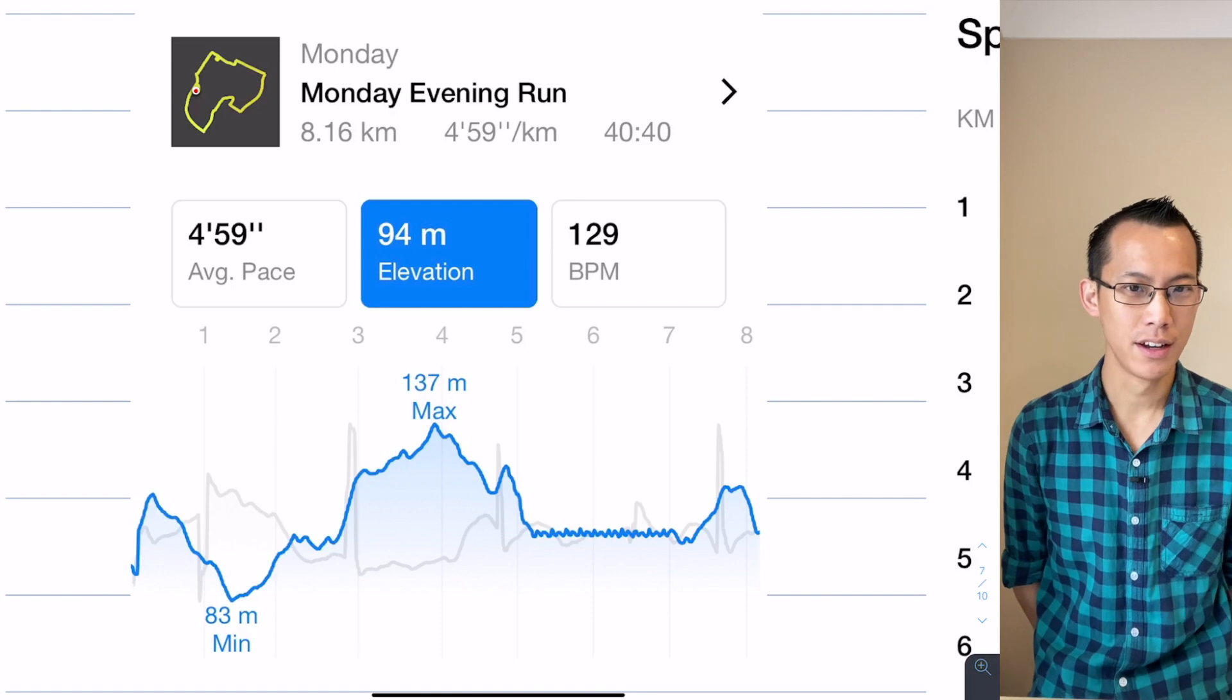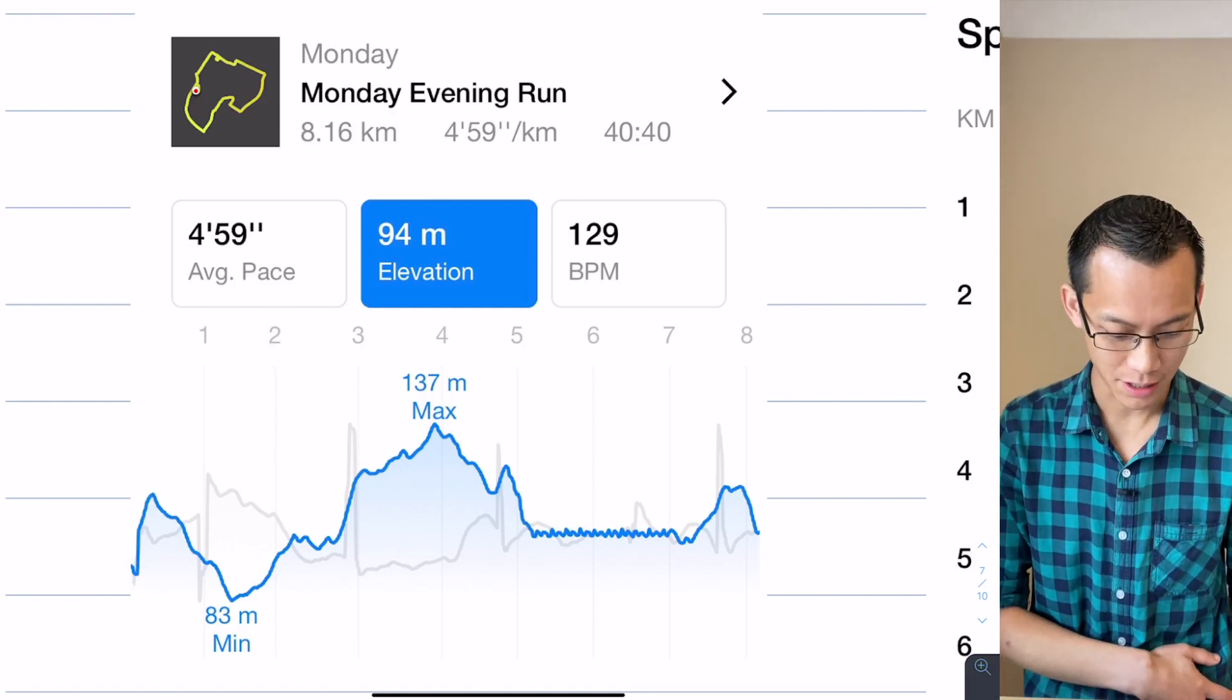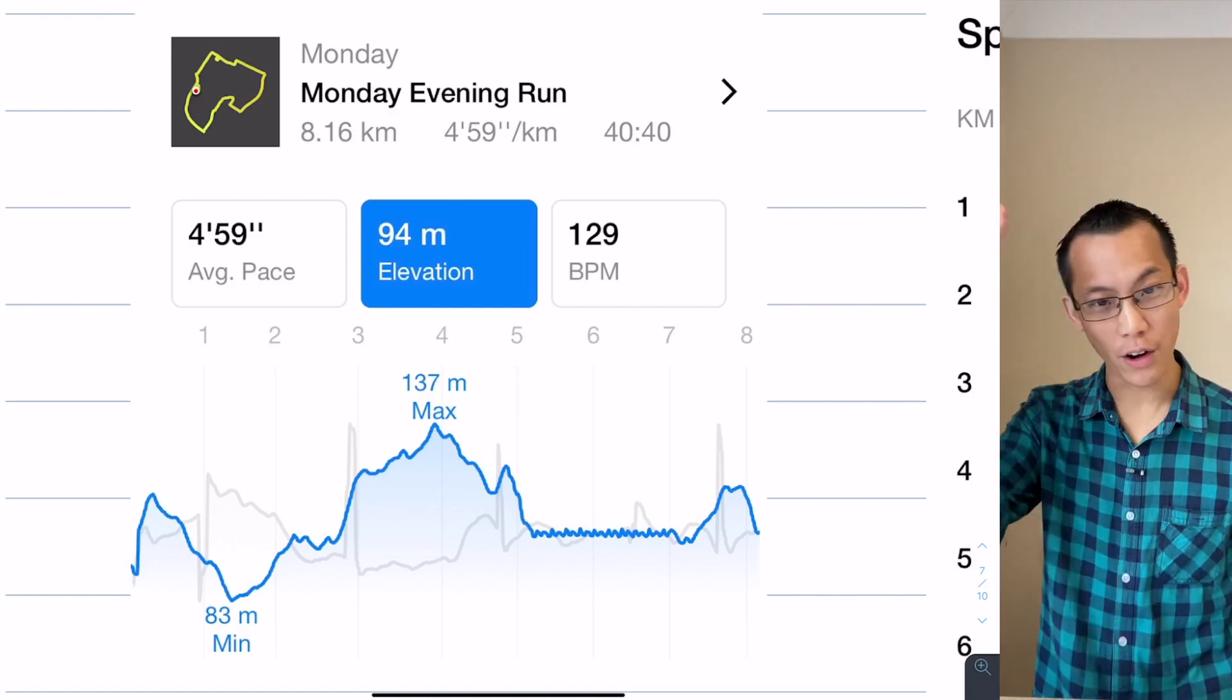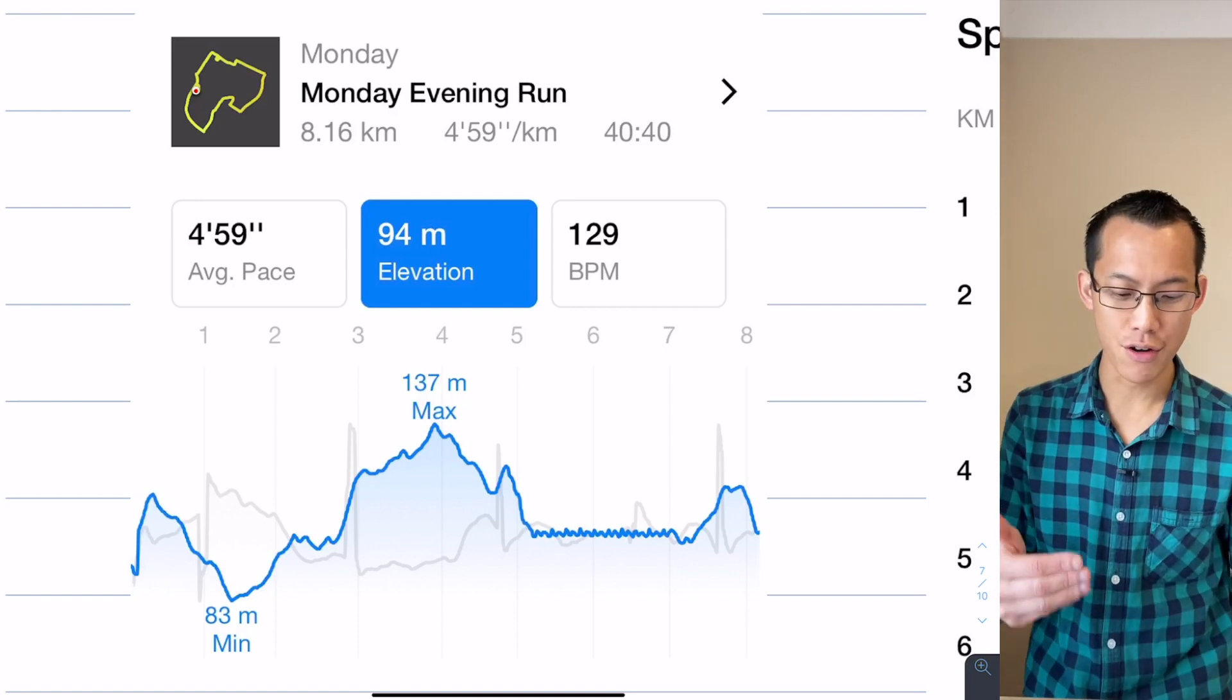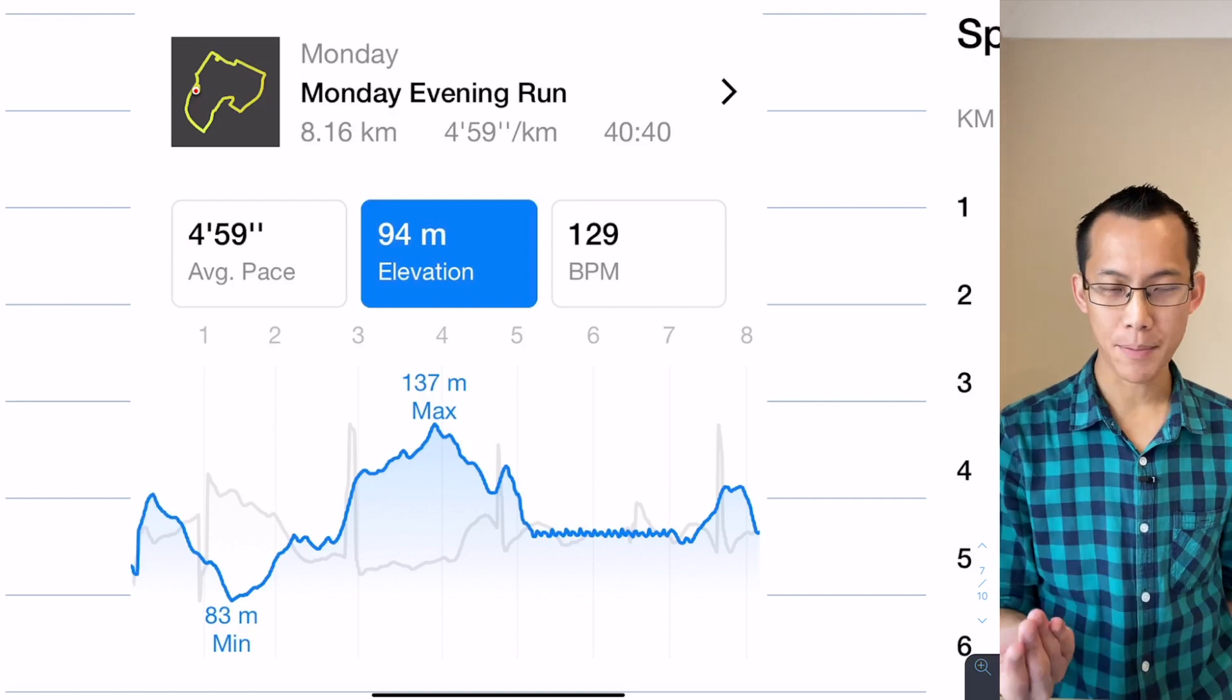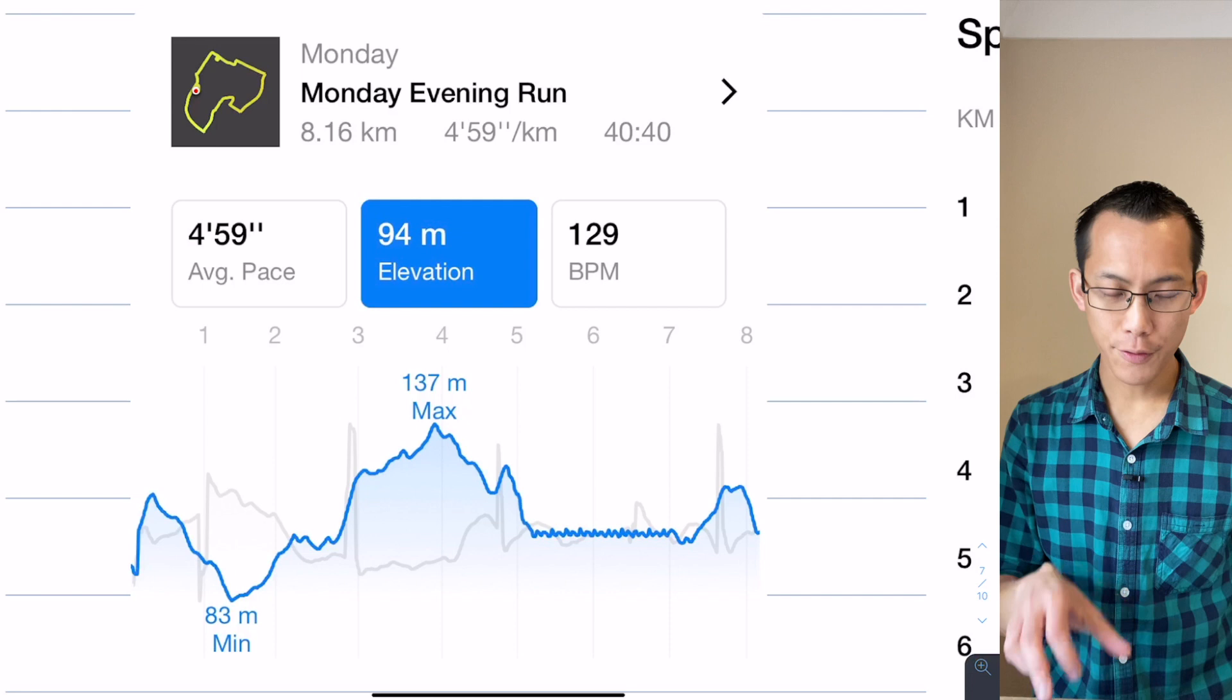I want you to in particular have a look at this feature that was highlighted on the left-hand side, which is elevation. Like most of you, I live in the hills area, which is really great for riding and terrible for running. You can see I've gone up and I've gone down.